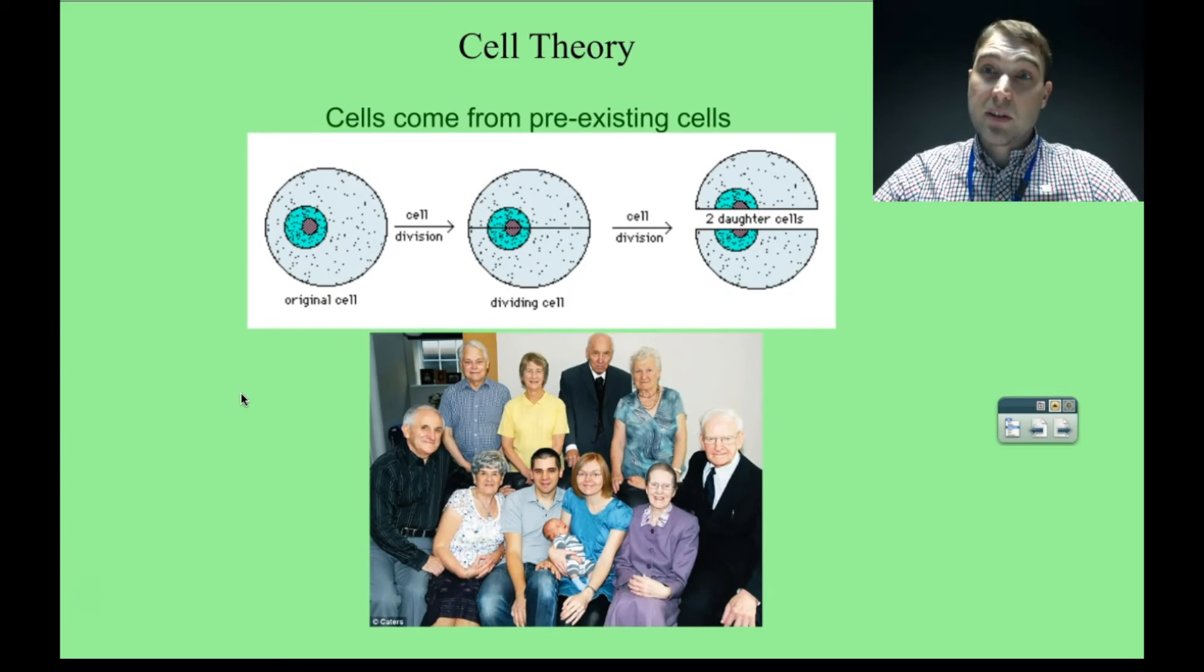Another idea from cell theory is that all cells come from pre-existing cells. You start off as one cell that divides into two. Those two cells divide into four and so on. Eventually you end up with you. But the cells in your body came from other cells previously. The sperm and ova that make you up came from your mother and father, and you can trace that back.